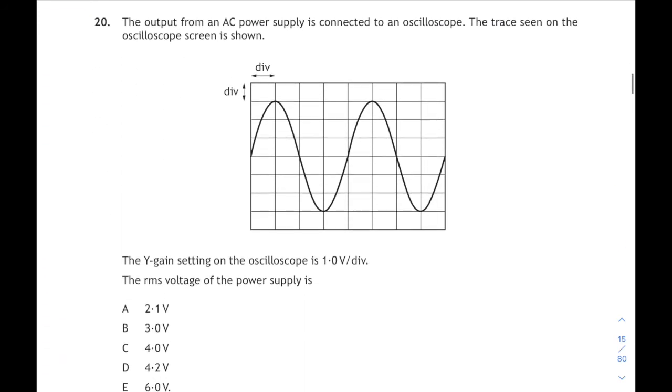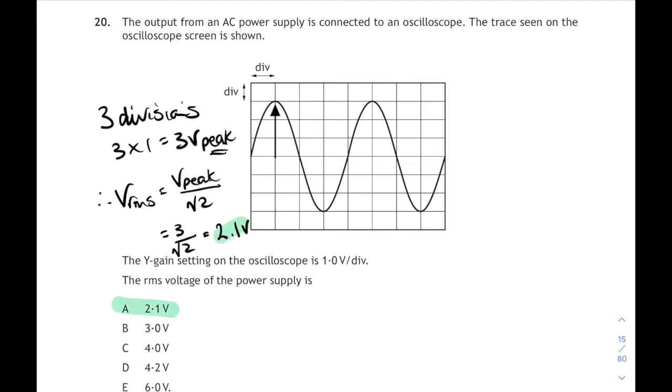Question 20 is AC electricity. The output from an AC power supply is connected to an oscilloscope and there's the trace you would see. The Y gain is set at one volt per division, one volt per box vertically. There's three boxes there. So the peak voltage will be three divisions times one volt per division, means we've got a peak voltage of three volts. But we don't want the peak voltage, we want the RMS voltage. You go to your relationship sheet and the equation there is that the RMS voltage is the peak voltage divided by root 2. So 3 divided by root 2 is equal to 2.1 volts. Remember the RMS value is always less than the peak value. So 2.1 volts, answer A.